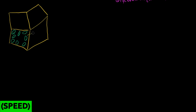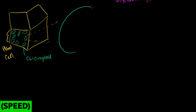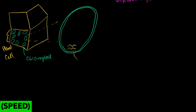Let's zoom in on one chloroplast. This thing right here is a plant cell, and each of these green things is an organelle called the chloroplast. If we zoom in on the chloroplast itself, it has a membrane. The fluid inside of the chloroplast, inside of its membrane, is called the stroma — the stroma of the chloroplast.